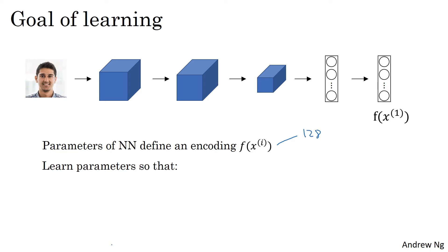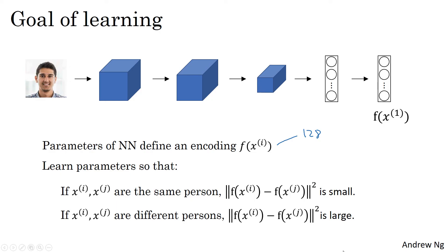So more formally, what you want to do is learn parameters so that if two pictures, xi and xj, are of the same person, then you want that distance between their encodings to be small. And in the previous slide, I was using x1 and x2, but it's really any pair xi and xj from your training set. And in contrast, if xi and xj are of different persons, then you want that distance between their encodings to be large.